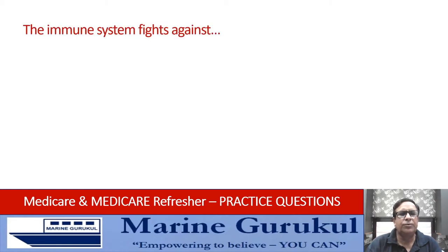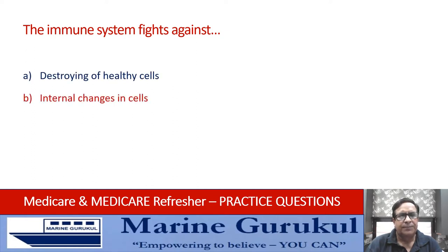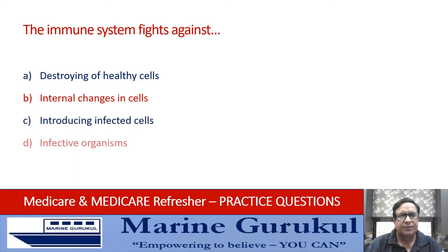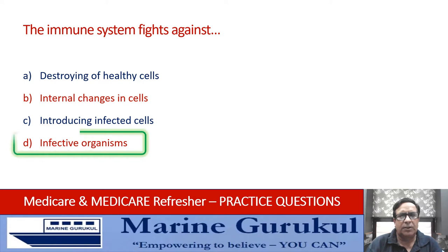The immune system fights against: destroying healthy cells, internal changes in cells, introducing infected cells, or infective organisms. The immune system fights infective organisms — the organisms that cause infection. So the answer is D.